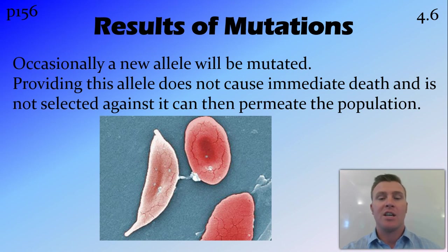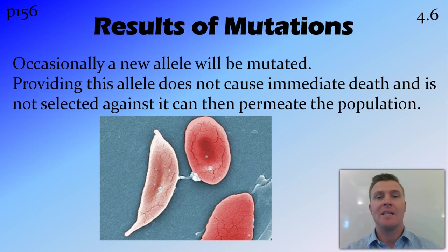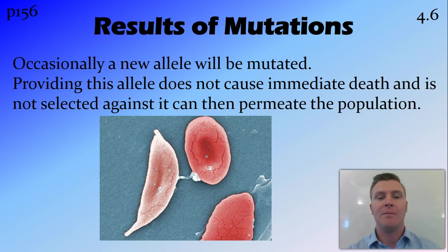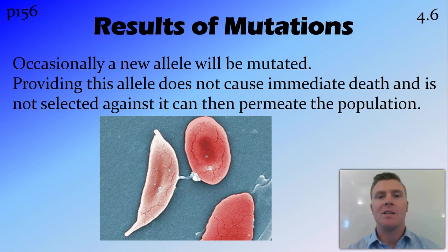Occasionally a mutation will create a new allele. Most mutations result in near-instant cell death, but if that doesn't occur, a new allele may be formed. That allele may be selected against by evolution and disappear quickly, or it may spread through the population. An interesting example is the allele for sickle cell anemia, where red blood cells form an abnormal shape, affecting their ability to move through capillaries and carry oxygen — yet people with sickle cell anemia seem to be resistant to malaria, giving this allele both an upside and a downside.